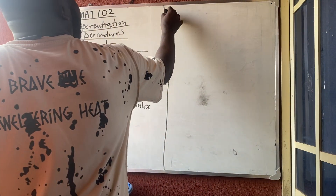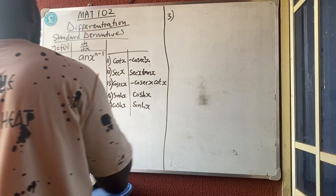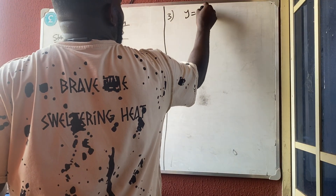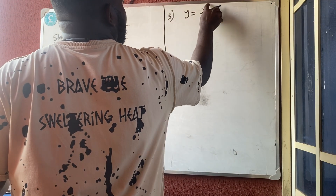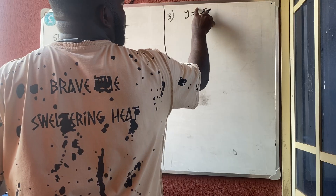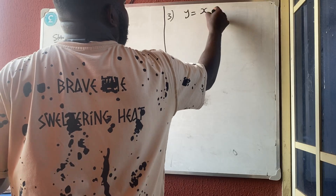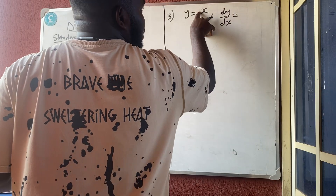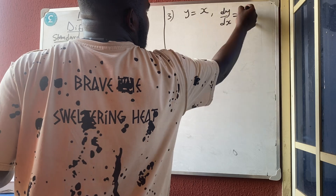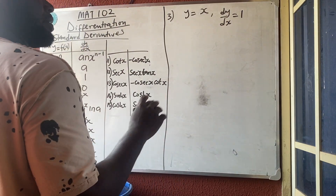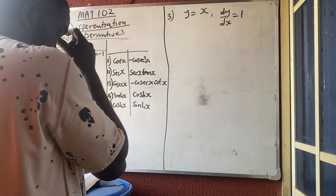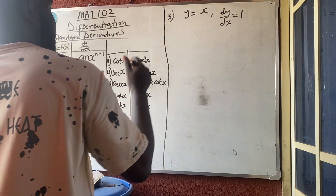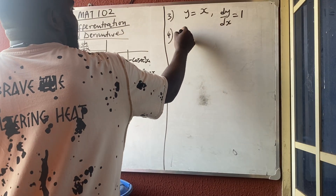Rule 3: if y = x — no power and no coefficient — then dy/dx = 1, because the coefficient is 1. This follows the same logic as Rule 2.